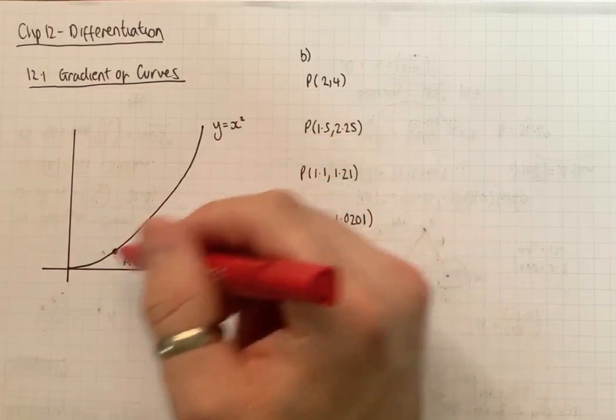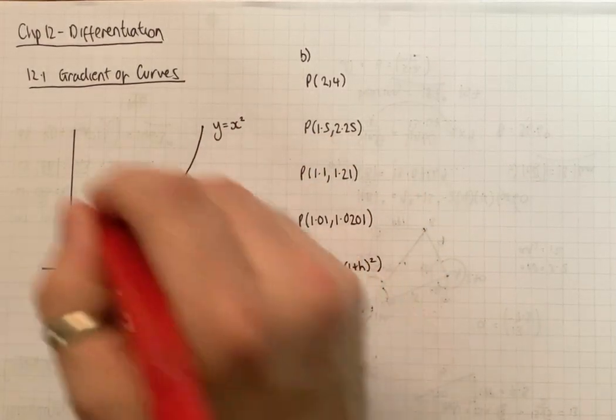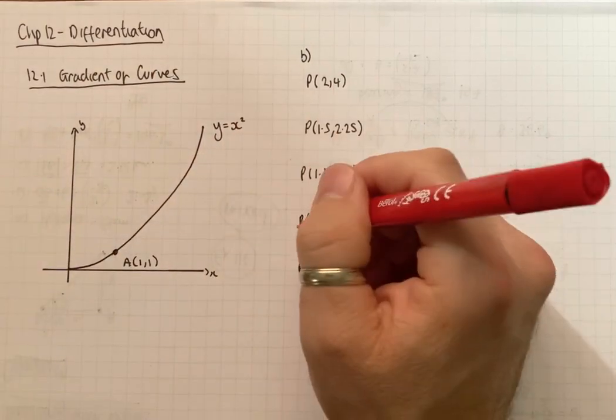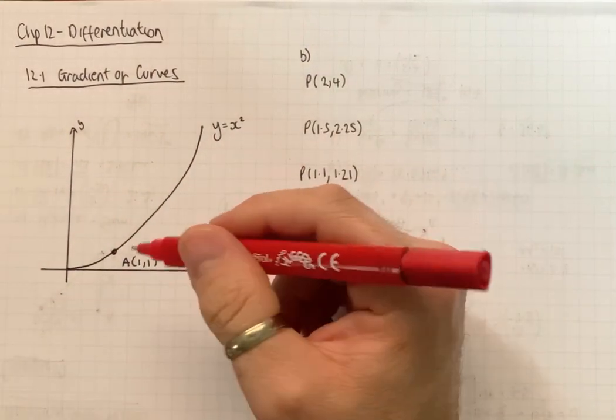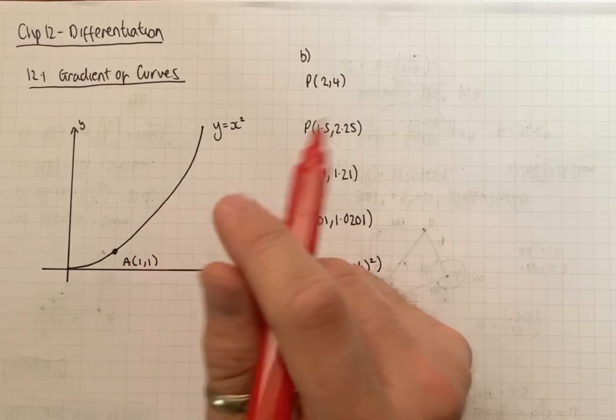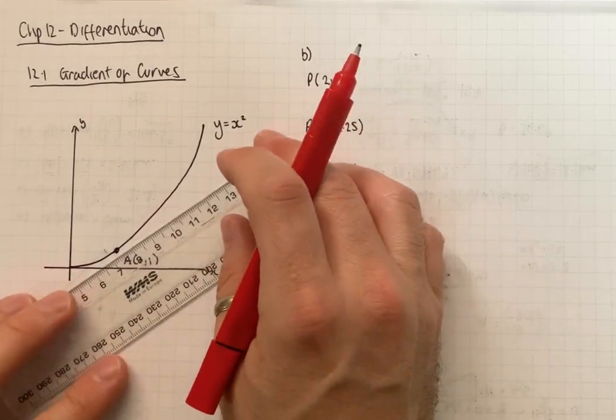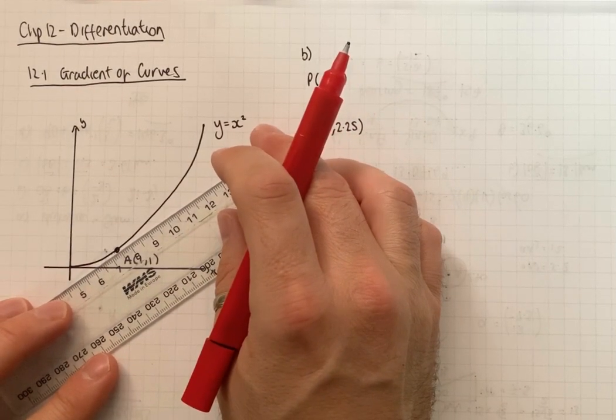We've got here a graph in the positive x direction of y equals x squared. We've got a point A at one, one and say if I wanted to work out the gradient at that point. To work out the gradient of that point, we'll work out the gradient of something called the Tangent Line.